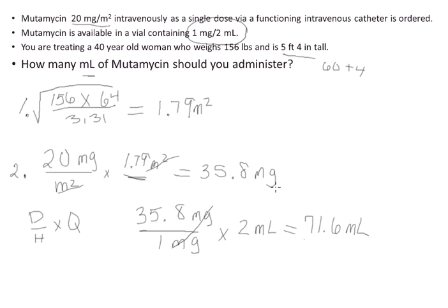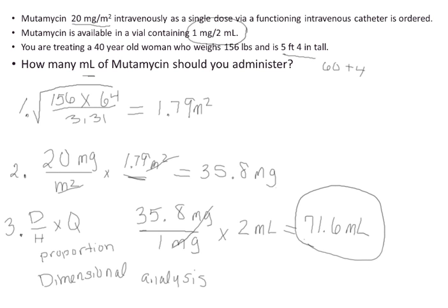Our third and final step is to use nursing formula, proportion, or dimensional analysis to convert milligrams into milliliters, and I used the nursing formula to come up with my answer of 71.6 milliliters.